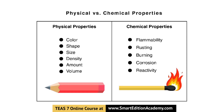Physical properties are traits such as color, shape, or size — you can observe these traits merely by looking at the substance. With chemical properties, however, a substance's flammability or rusting levels are something that must be measured or described with experiments or tests over time.